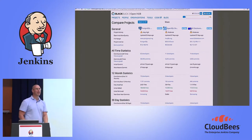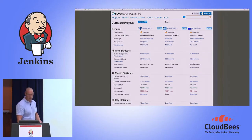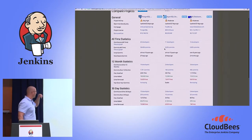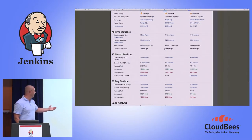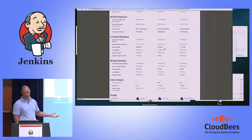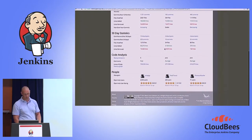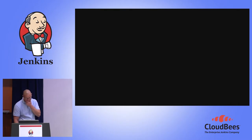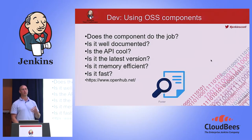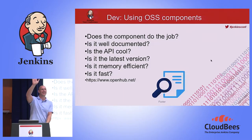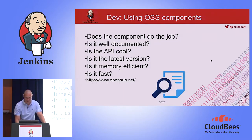One thing you can do is create a comparison matrix. In this particular case, I queried databases and you can compare different components in terms of number of developers, number of commits, and all those statistics. Selecting the right open source components can be a challenge — who has ever faced that? That explains why it's not a very interesting topic for everyone.